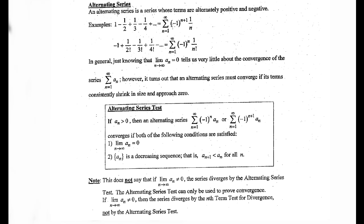What makes it alternating is we have negative 1 to the n plus 1 — this is what makes it alternating, not just the value negative. Or it could start at negative and go positive, negative, positive, and keep on going in that pattern. This is also an alternating series.